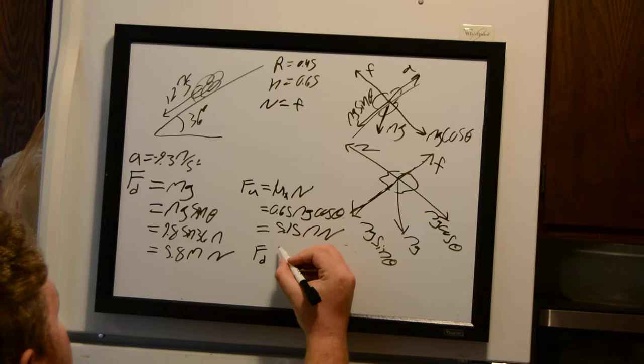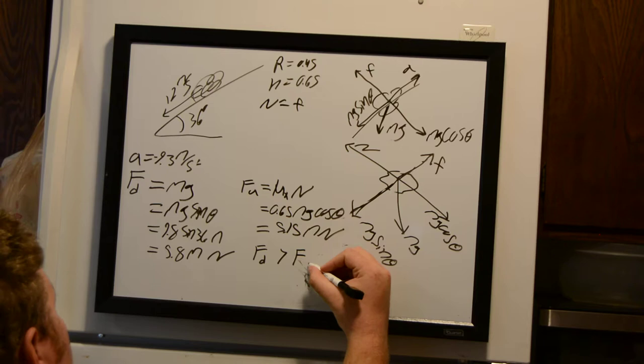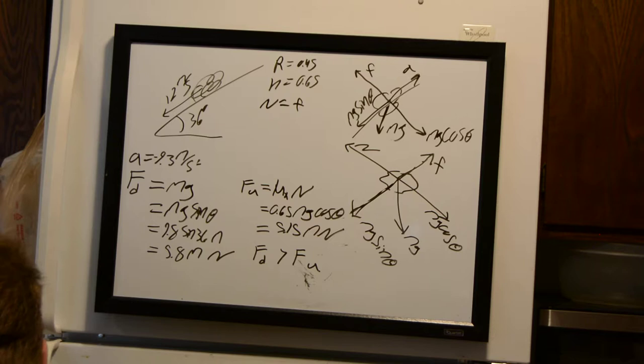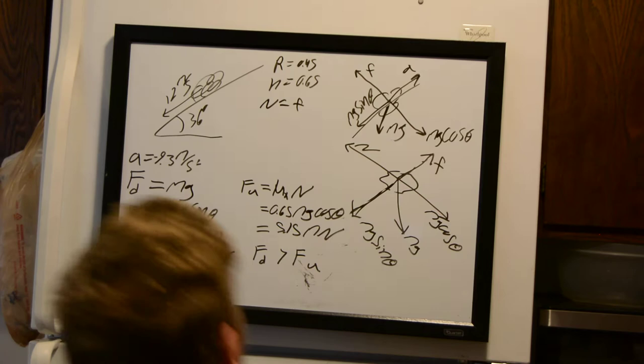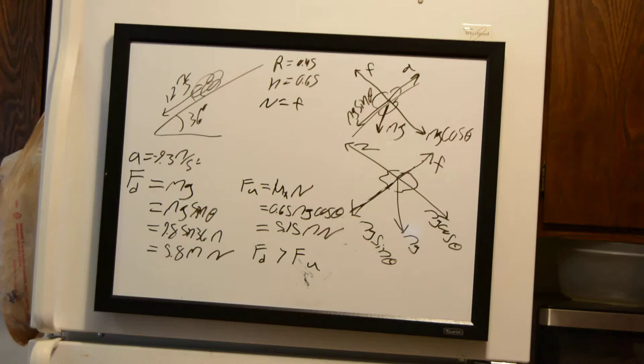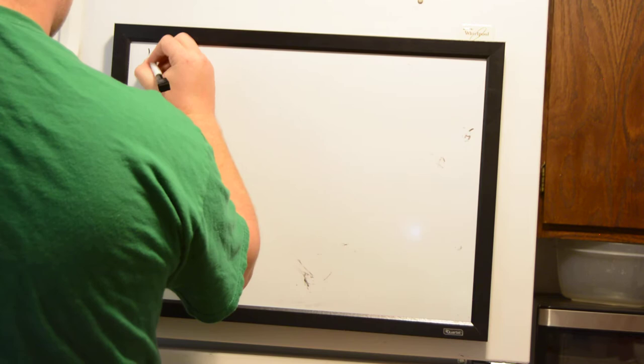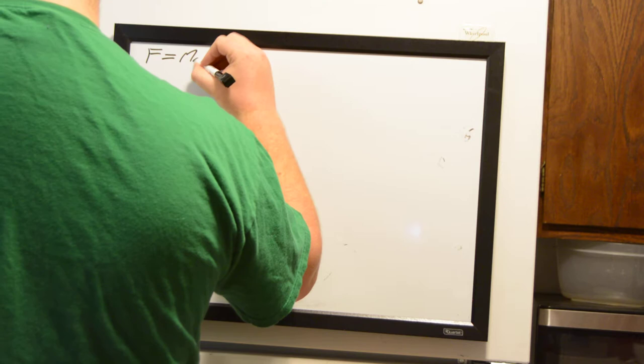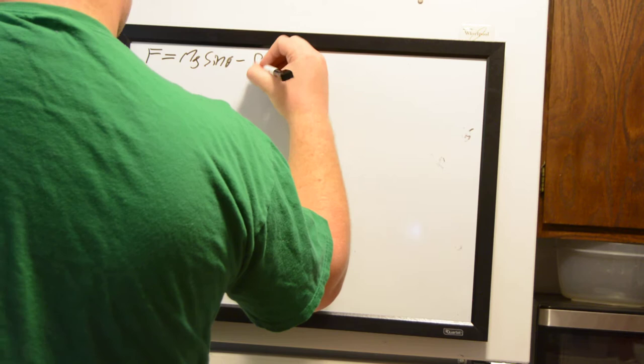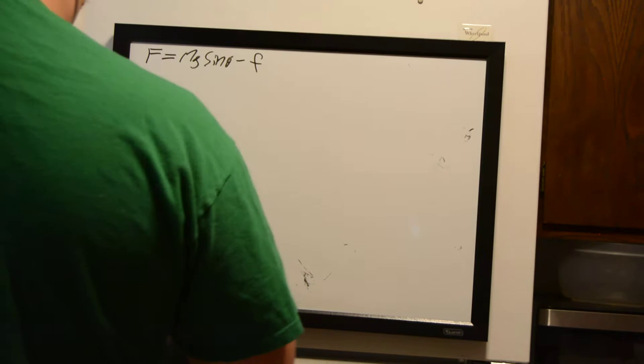The force pulling us down is greater — ever so slightly — than the force pulling us upward, so we're going to slide down the hill. Now we want to find the acceleration on the way down. From our free body diagram, the net force equals mass times gravity times sine of theta minus our frictional forces — that's from Newton's third law, the same approach we used in part A.